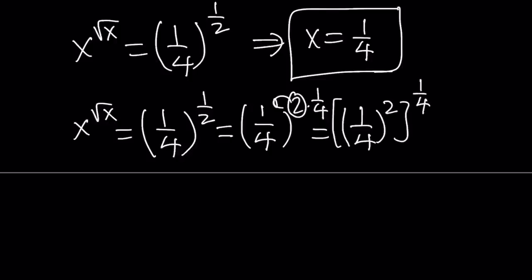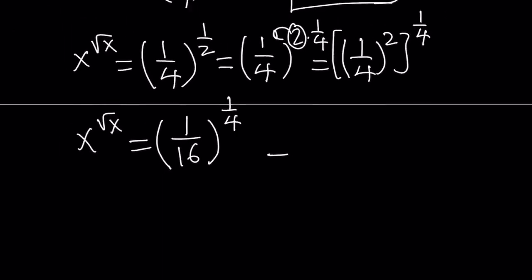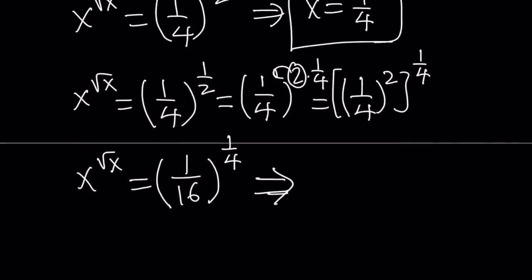And that is going to give me the following. I know some of you are going to find this around about method, but it gives me the nice identity. One sixteenth to the power one fourth. And again, I have the x in the base and the square root of x in the exponent. So, this implies, uh-oh, this implies that from here x can be one over sixteen.